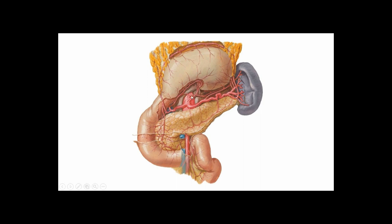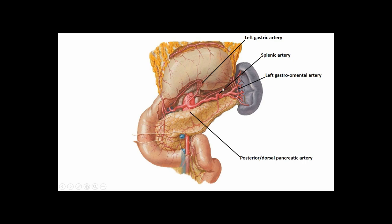Here we've lifted up the stomach and greater omentum, exposing the pancreas, splenic artery, and other structures like the duodenum transitioning into the jejunum. Off the celiac trunk we can see the left gastric artery and the splenic artery — very tortuous in real life. Off the splenic artery we have multiple branches to the pancreas: the dorsal or posterior pancreatic artery proximally, followed by the greater pancreatic artery, and the artery to the tail of the pancreas, sometimes called the caudal pancreatic artery. These form a network within the pancreas.